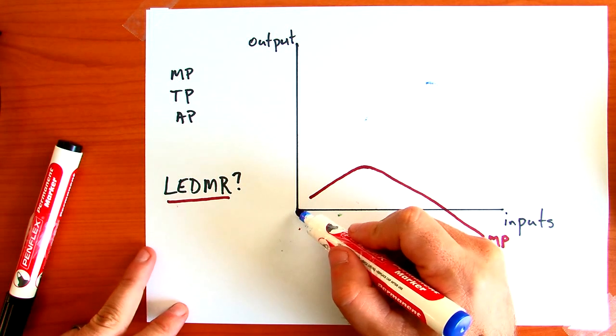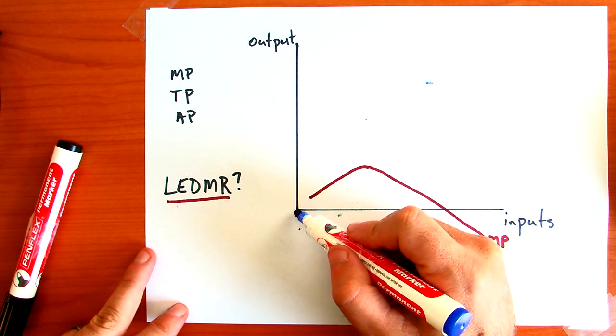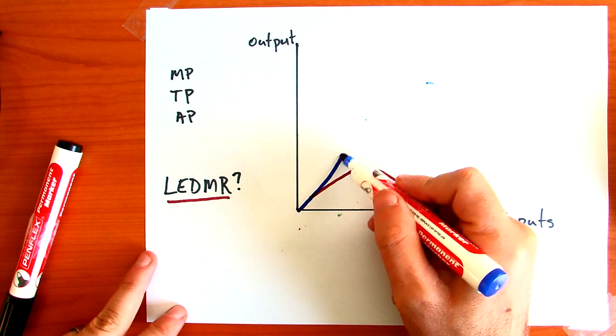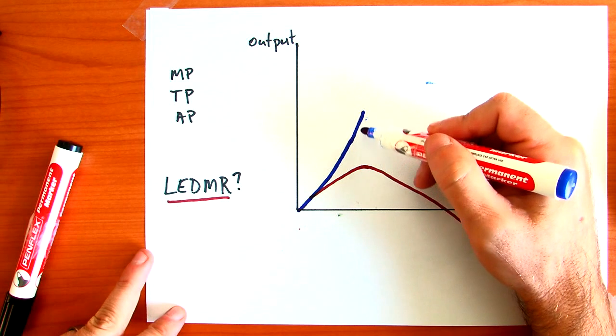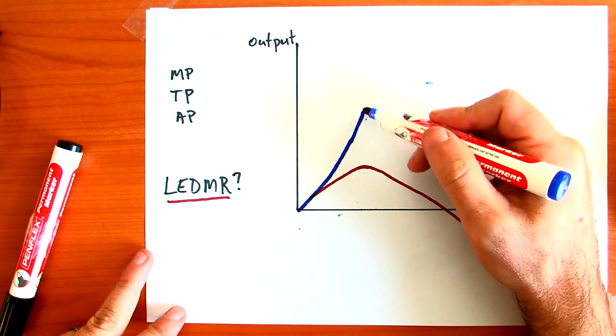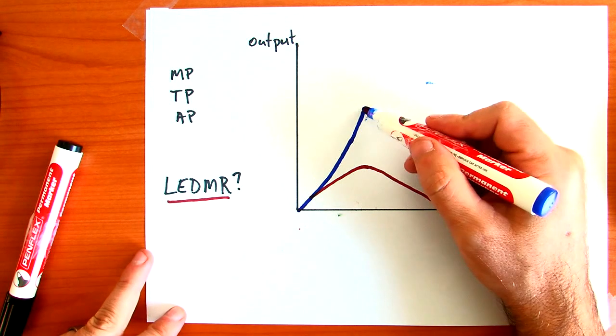Total production will rise as marginal production rises, and it will rise at an increasing rate. So we draw it with a steepening curve. Until we get to the point, to the top point of marginal production, and from this point,